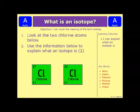Let's have a look at an example question then. So this one is looking at two different isotopes of chlorine. It says look at the two chlorine atoms below. Use the information below to explain what an isotope is. So not only are you saying what an isotope is, but you're using the actual information from the two chlorine atoms. So think back to what you've seen in the rest of the video. Pause it and have a go at writing your answer.